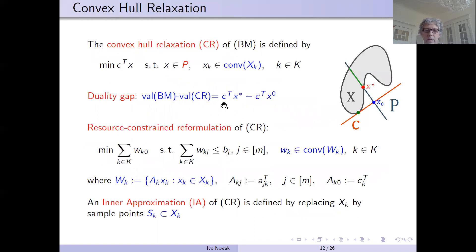As I said, the most important tool is the convex hull relaxation, which is defined simply by replacing the feasible set by its convex hull. The difference of the objective functions of the relaxation and the original problem is the duality gap.